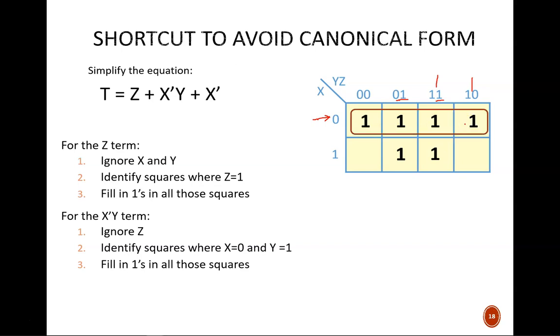Now that the k-map is filled in, we make our groups. Here there are two groups of four. The brown skinny group gives the product term X'. The purple fat group gives the product term Z. And there we have the final equation.